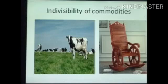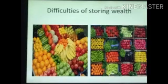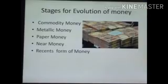Now let's see the drawback of lack of indivisibility. Person one has a cow and person two has a chair, and both of them have to exchange the product. We all know that the cow is more valuable than a chair. You cannot divide the cow into parts to make it equal in value to a chair. There is also a fourth drawback: difficulties of storing wealth, as fruits and vegetables cannot be stored for long periods of time.